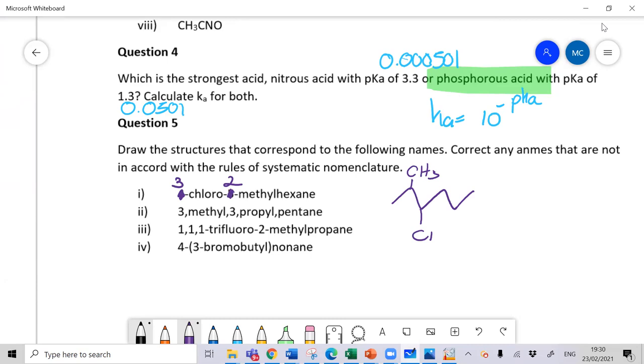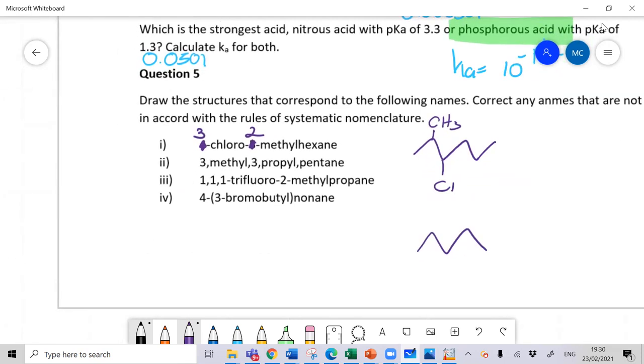For the second one, 3-methyl-3-propyl-pentane. This was fine, apart from the fact that you had the commas. You should not have had the commas. Once you drew the structure, you realize that you have 1, 2, 3, 4, 5, 6. So this should not have been 3-methyl-dipropyl-pentane, but rather this should have been 3-ethyl-3-methylhexane. So this was a little bit of a tricky question to see if you actually know how to do the naming.